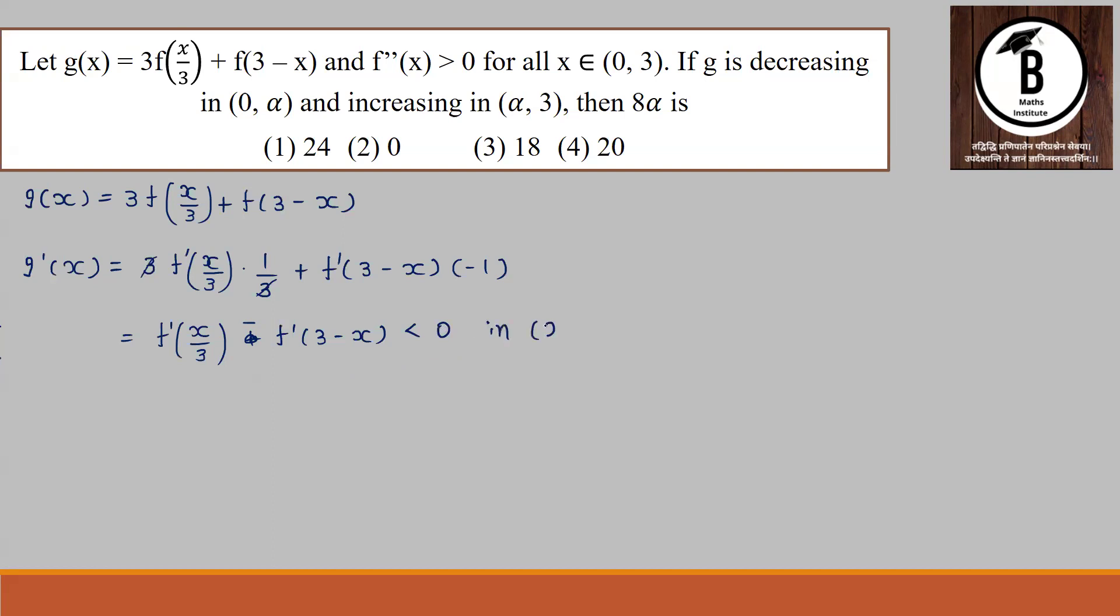Between 0 and α, this means we can simplify this. Taking LCM, we get (x/3 + (3-x))/3 < 0, which simplifies to (x + 3(3-x))/3 < 0. So 4x < 9, which means x < 9/4.